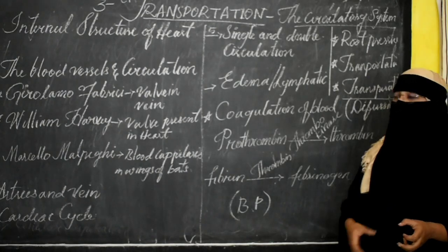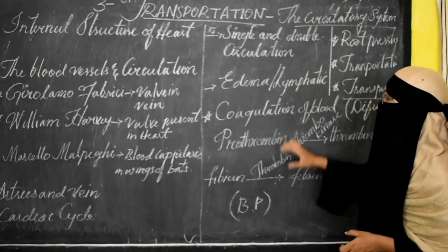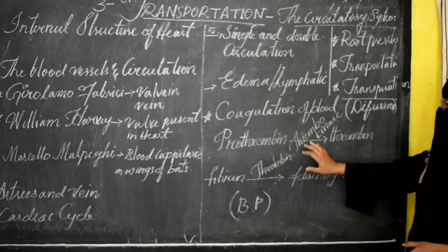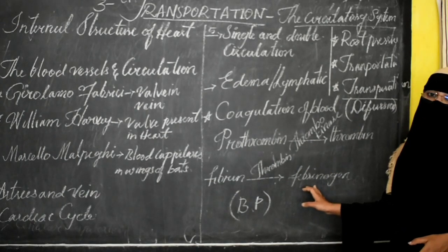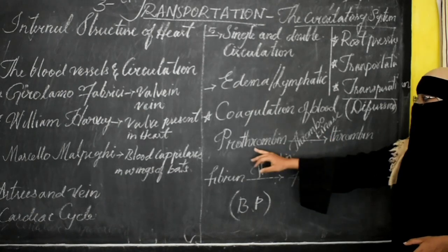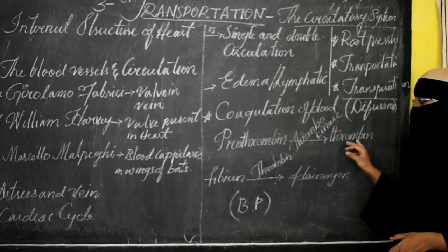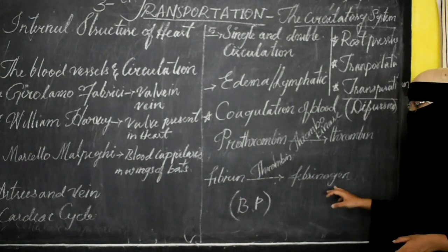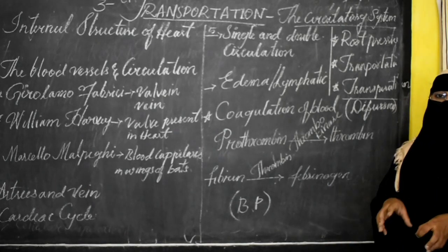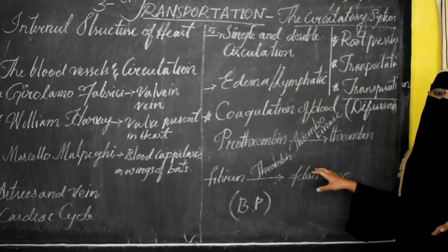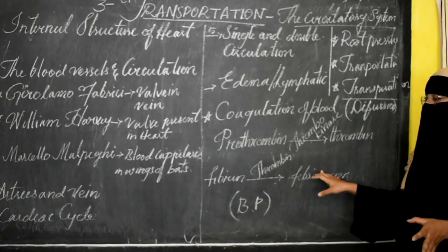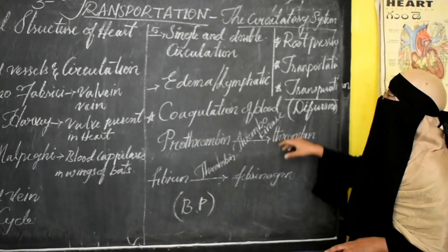Blood coagulation is very important. It mainly occurs due to the presence of platelets. Platelets release an enzyme called thrombokinase, which acts on prothrombin and converts it into thrombin. Thrombin then acts on fibrinogen and converts it into insoluble fibrin, which does not allow blood cells to flow. This explains why when you get an injury, blood starts to coagulate within five to six minutes and stops flowing.